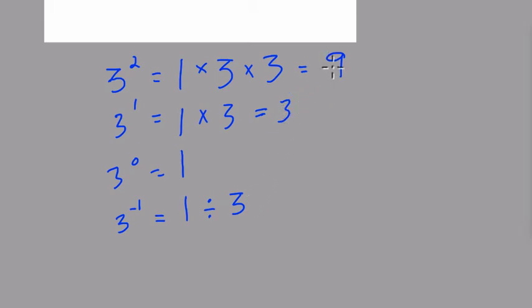And if we follow this pattern where we're just dividing by 3 as we work our way down, 9 divided by 3 is 3 divided by 3 is 1 divided by 3 is 1 third. And here I start to see this beautiful symmetry that when we have 3 to the negative first, we get the reciprocal of 3 to the first.